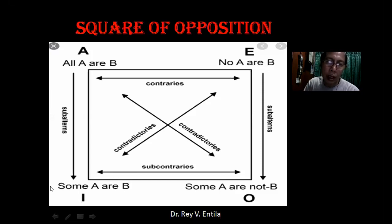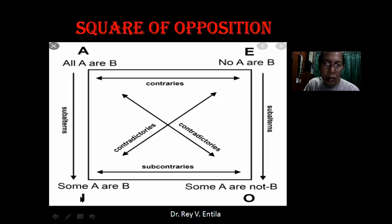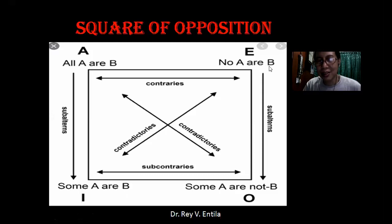For example: 'Some Lasallian students are intelligent' — said by I. But E says: 'No Lasallian students are intelligent.' So E is contradicting I. I says some are intelligent, but E says no, absolutely none are intelligent — all are fools. So they are in contradiction.